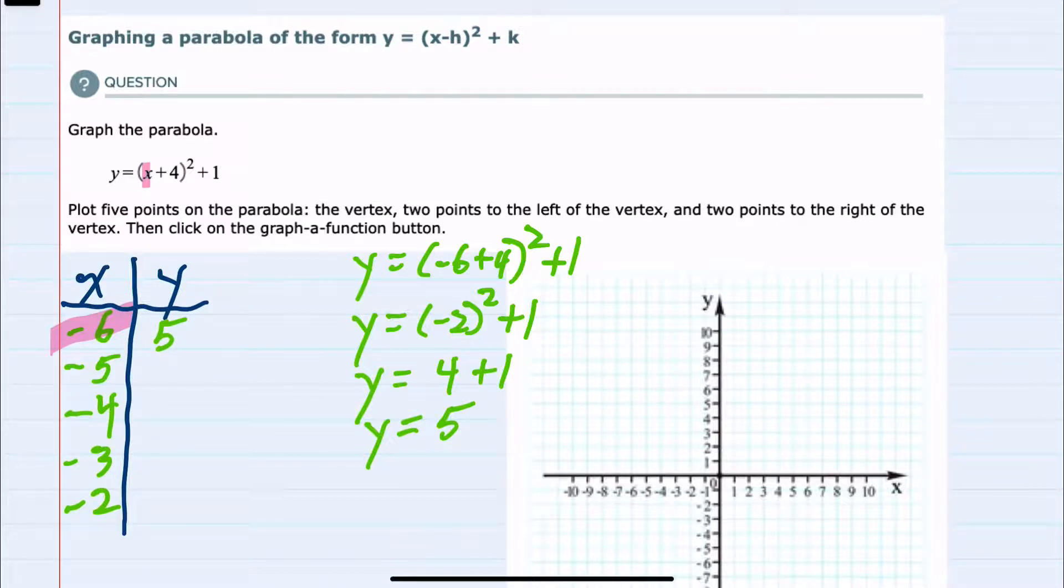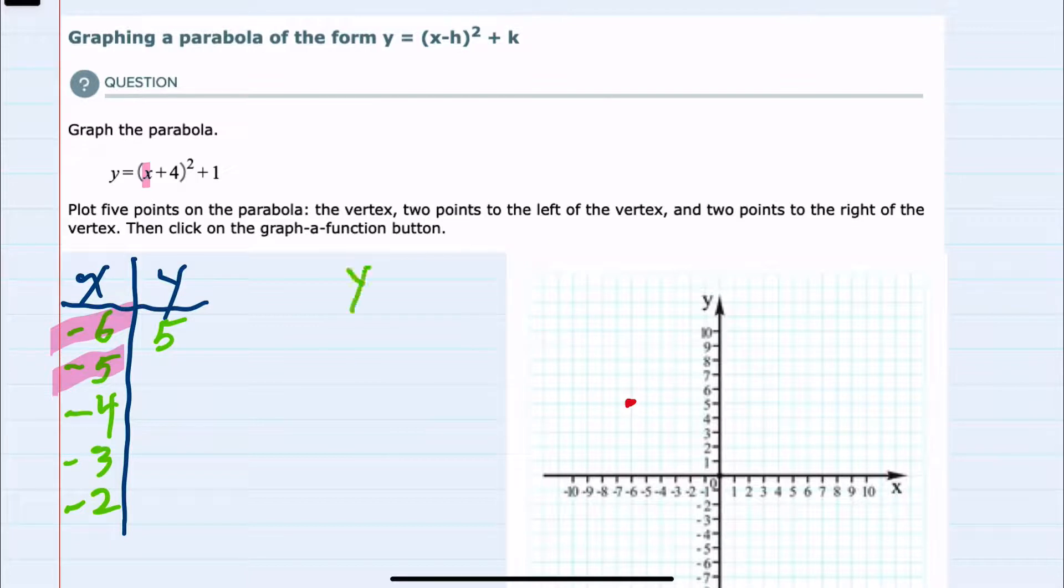And then we'll move on to the next x value, -5. We would have y = (-5 + 4)² + 1. Inside parentheses, we would then simplify to -5 + 4 as -1. Squaring the -1 would be a positive 1 plus the one outside, y equals 2 is our y value. So we now have the coordinate (-5, 2).